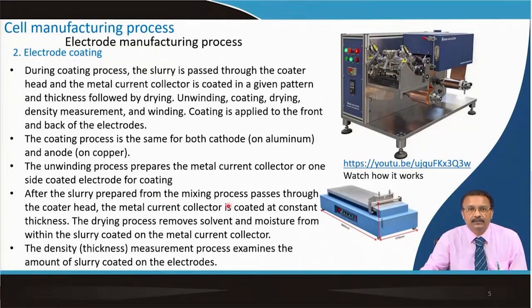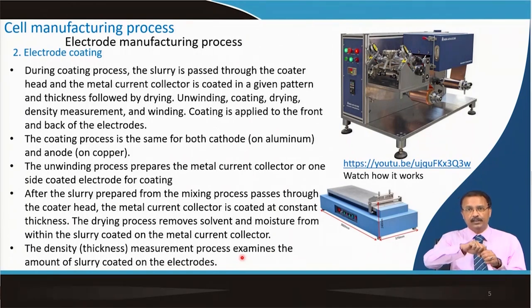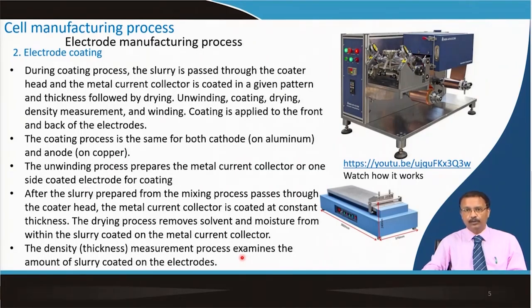The coating process is the same for both cathode — usually on aluminum — and anode — on copper. The unwinding process prepares the metal current collector for coating, and then the other side is also coated to have more active material and increase capacity. The slurry passes through the coater head, is coated at constant thickness, and the drying process removes solvent and moisture. Thickness measurement gives the areal density of the slurry coated on the electrode.